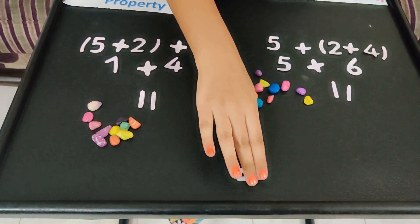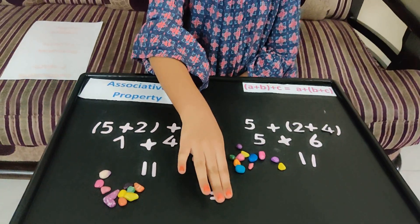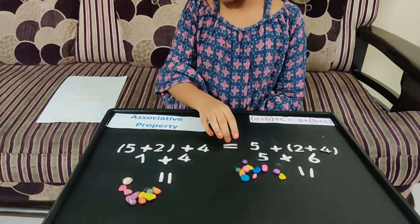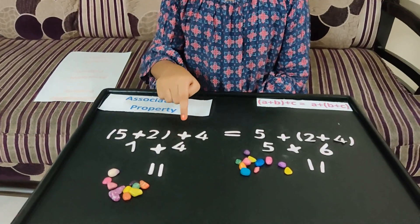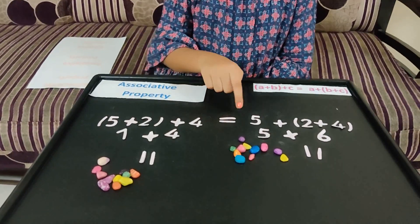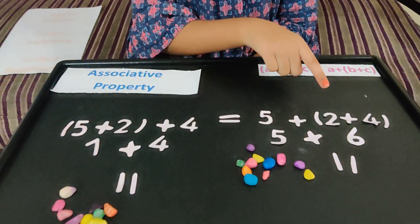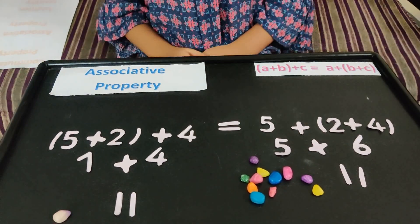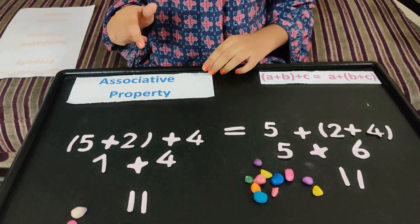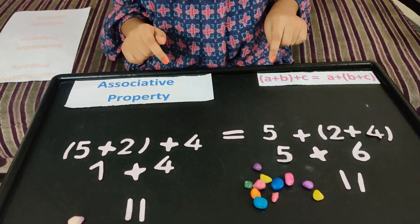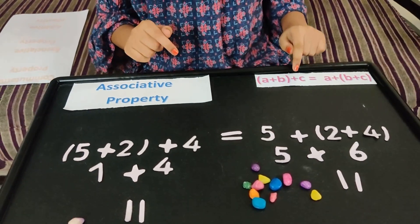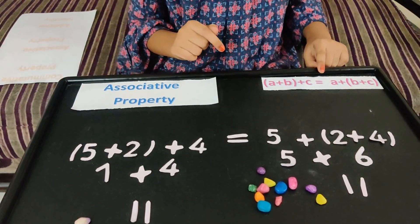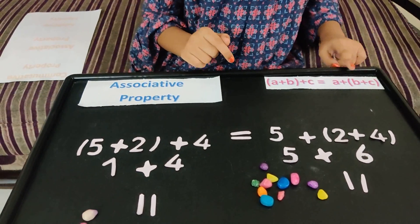So, 11 is equal to 11. Therefore, (5 plus 2) plus 4 is equal to 5 plus (2 plus 4). Generally, associative property is: (A plus B) plus C is equal to A plus (B plus C).